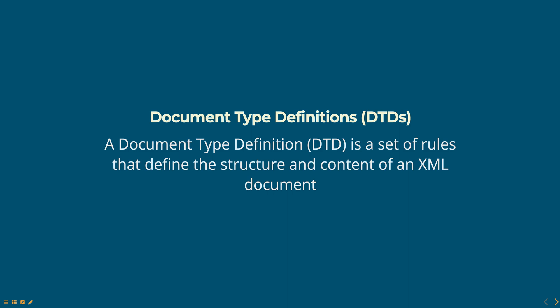Hello everyone. Today we are going to talk about document type definitions, part of a web technologies course. A document type definition, DTD, is a set of rules that define the structure and content of an XML document. DTDs are used to define the elements, attributes, and entities that can be used in an XML document, as well as the rules for how they can be used.